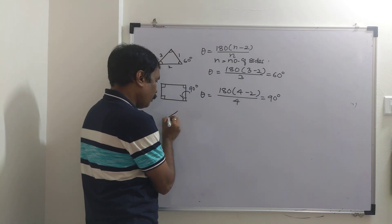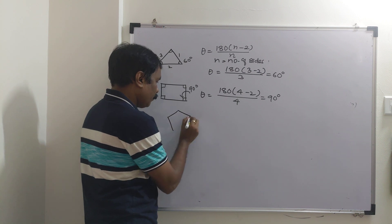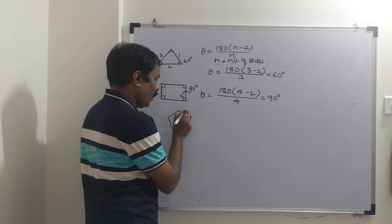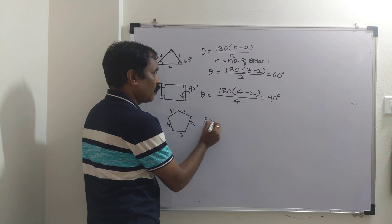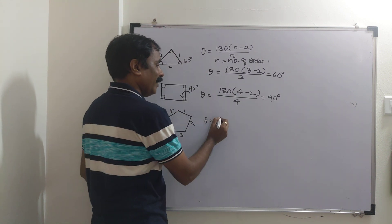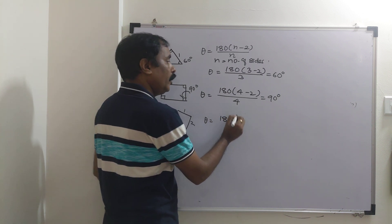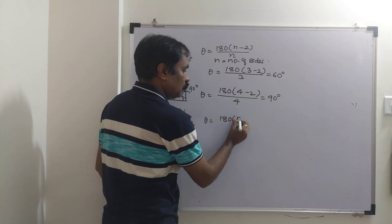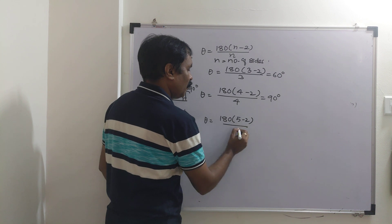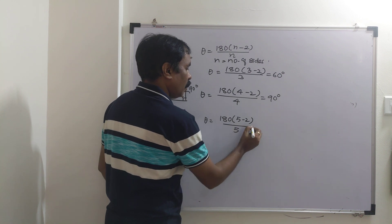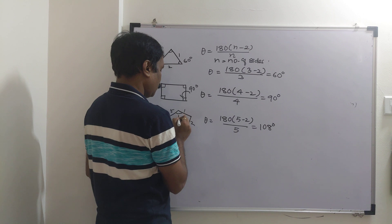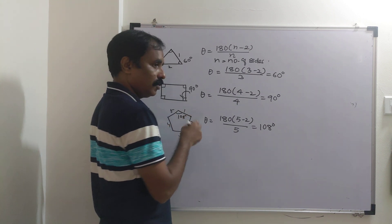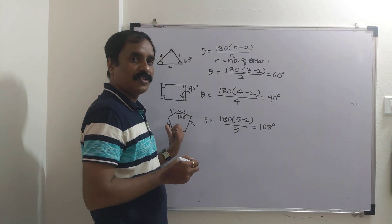For cyclopentane, with 5 sides, theta equals 180 times (5 minus 2) divided by 5, which gives 108 degrees. The bond angle is 108 degrees.